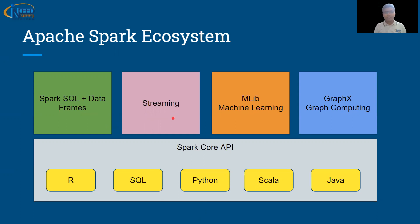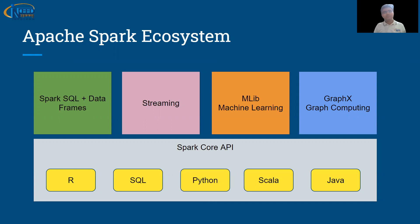The second component is Streaming — streaming is real-time data that keeps continuously flowing. Many applications require real-time data analysis. For example, if a camera captures an accident on the road and real-time processing is done with a tool like Spark, immediate help can be given to those involved. Spark can handle both batch processing and real-time streaming data processing.